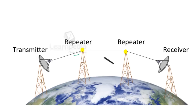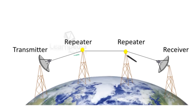Due to the use of repeaters, the cost of transmission of the signal between two stations increases. The problems faced in the microwave communication system are solved to a large extent by using a geostationary satellite as a communication satellite.